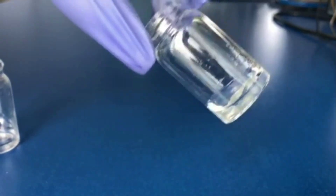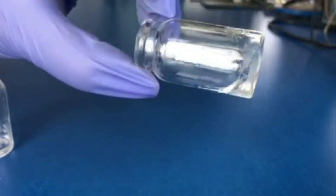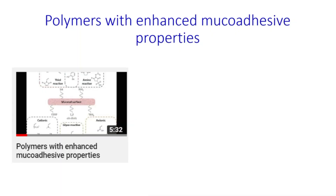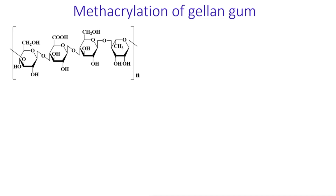Gellan gum has been used as a gelling agent in timolol maleate ophthalmic gel-forming solutions for the treatment of glaucoma. In our previous video, we already discussed the chemical approaches used to enhance mucoadhesive properties of polymers. We have also recently reported that methacrylation of chitosan results in significant improvement in its ability to adhere to mucosal tissues. In order to synthesize gellan gum with enhanced mucoadhesive properties, we used